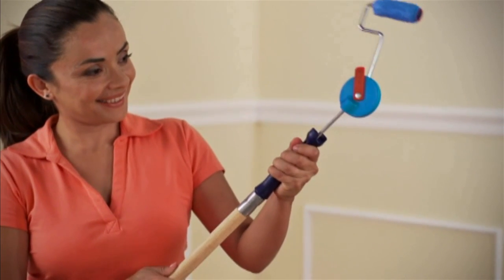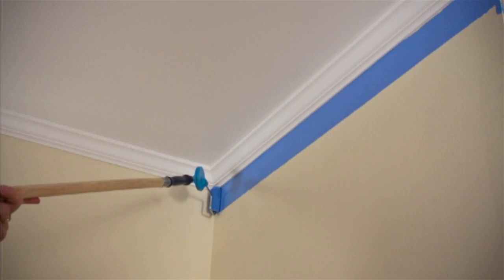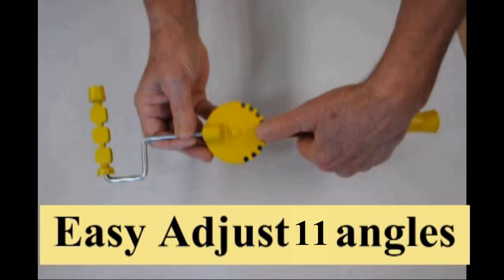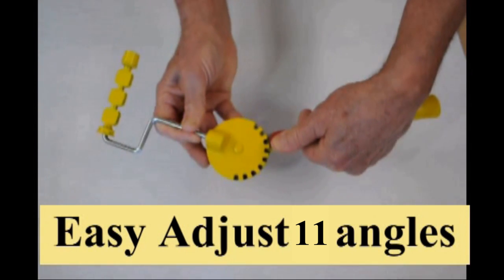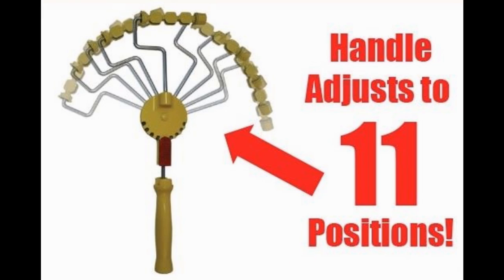Finally, there is a tool that when used on an extension pole can eliminate ladder work. Here are some pictures showing how easy it is to adjust our handle. There are 11 adjustable angles.